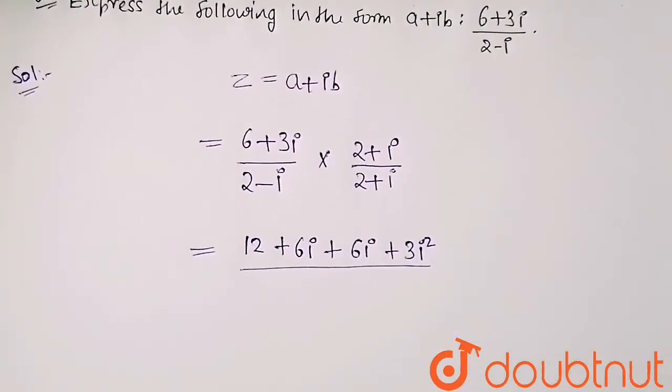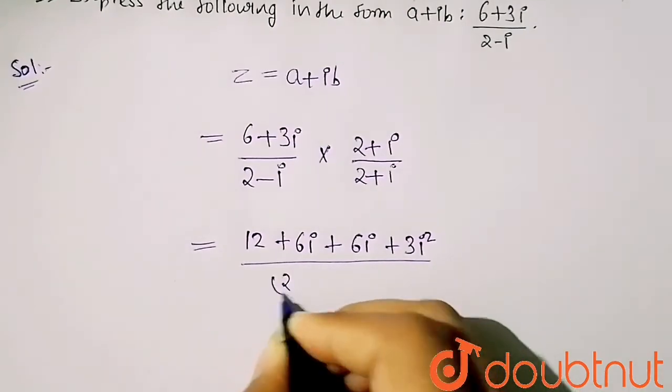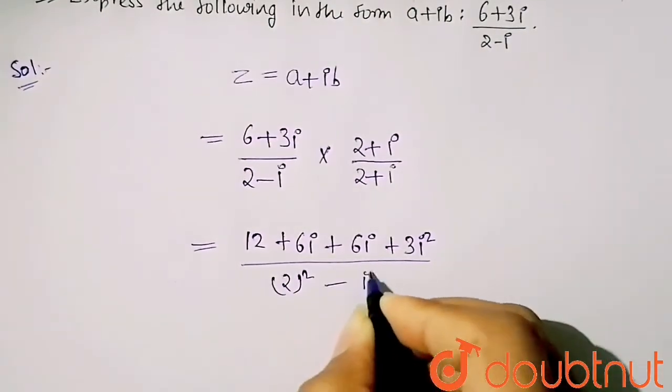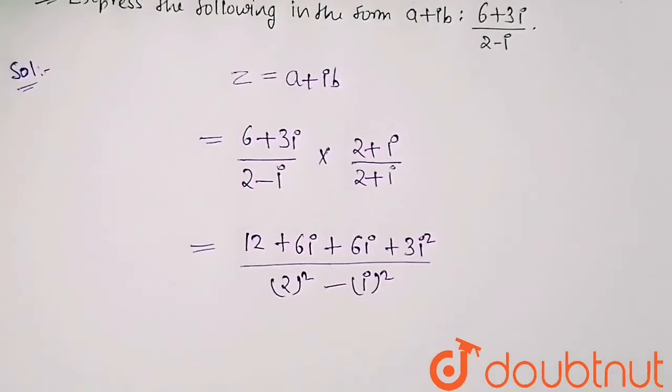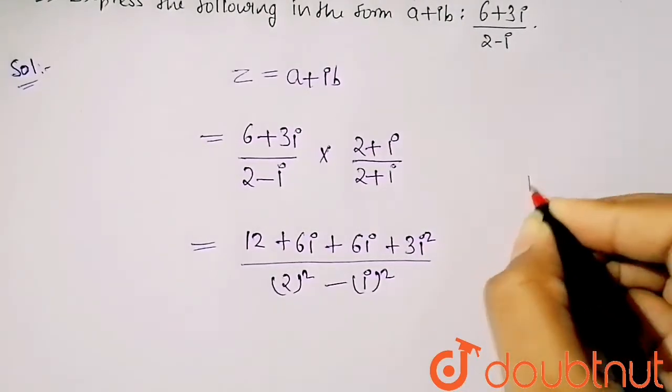Upon, when you multiply this, you can see it is (a + b)(a - b) form, which will give you a square minus b square. So here, 2 square minus iota square.